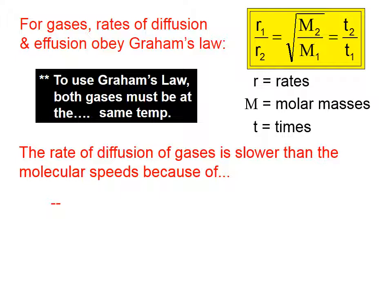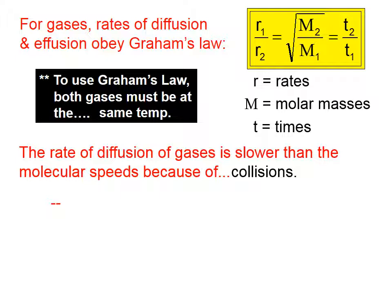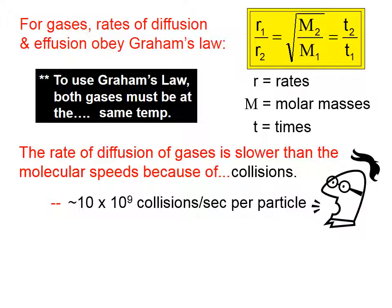The rate of diffusion of gases is slower than the molecular speeds because of collisions. Gas particles at normal room temperatures travel very fast, hundreds of meters per second. But they don't actually move a hundred meters down there. In other words, they don't move, let's say, two football fields away in one second. And that's because there are many other gas particles that they bump into. So they just end up kind of migrating over time, even though they are traveling at hundreds of meters per second. It's been estimated that gas particles experience something like 10 billion collisions per second with all the other gas particles that are around them, which I find to be remarkable.